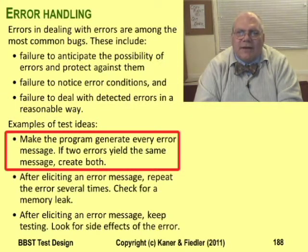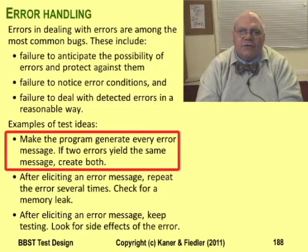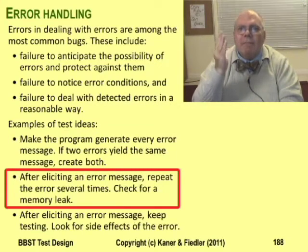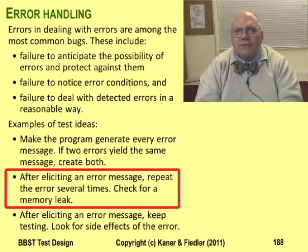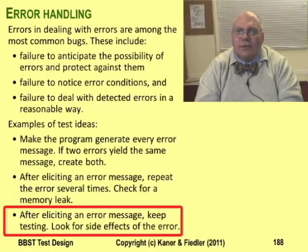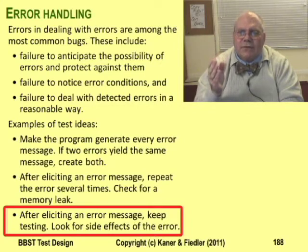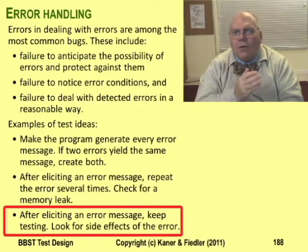Try to get a list of error messages, or try to create one. Maybe you have to reverse engineer the program to find the list in the code. But once you have the list, make the program generate every message — do it many times for every message. Check how much available memory you have as you do this. Track how long the program takes to recover, or how long it takes to do other tasks. Does the program gradually slow down? Does the amount of available memory gradually go down? If the program saves data to disk, check what's been saved. These are all examples of looking for side effects of error handling.